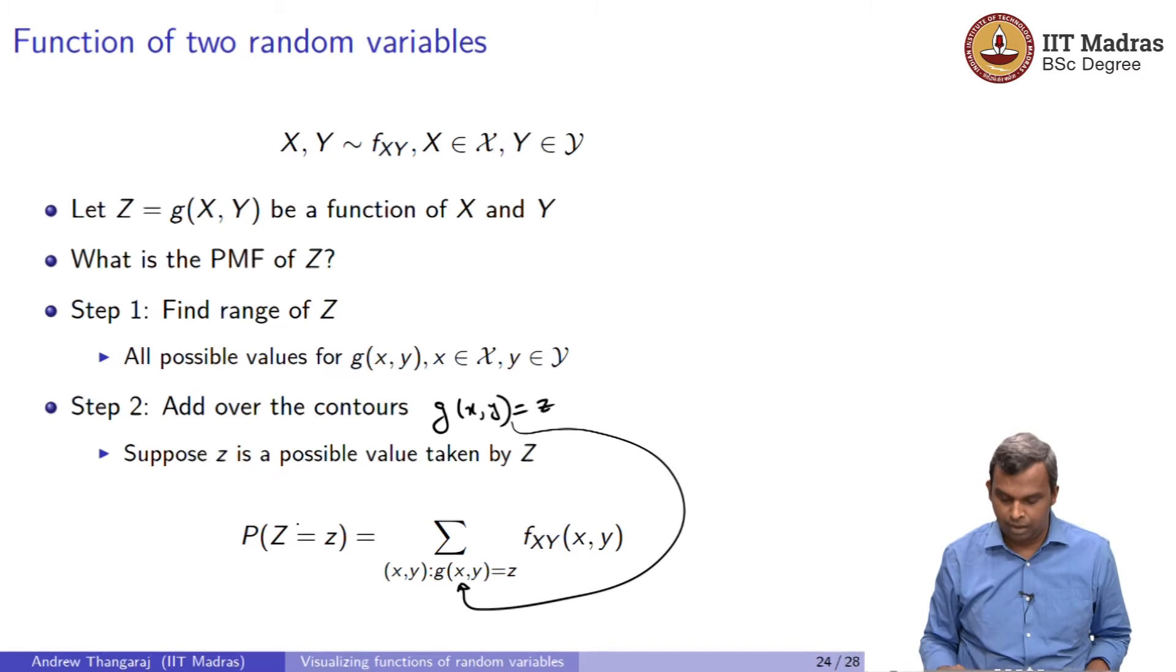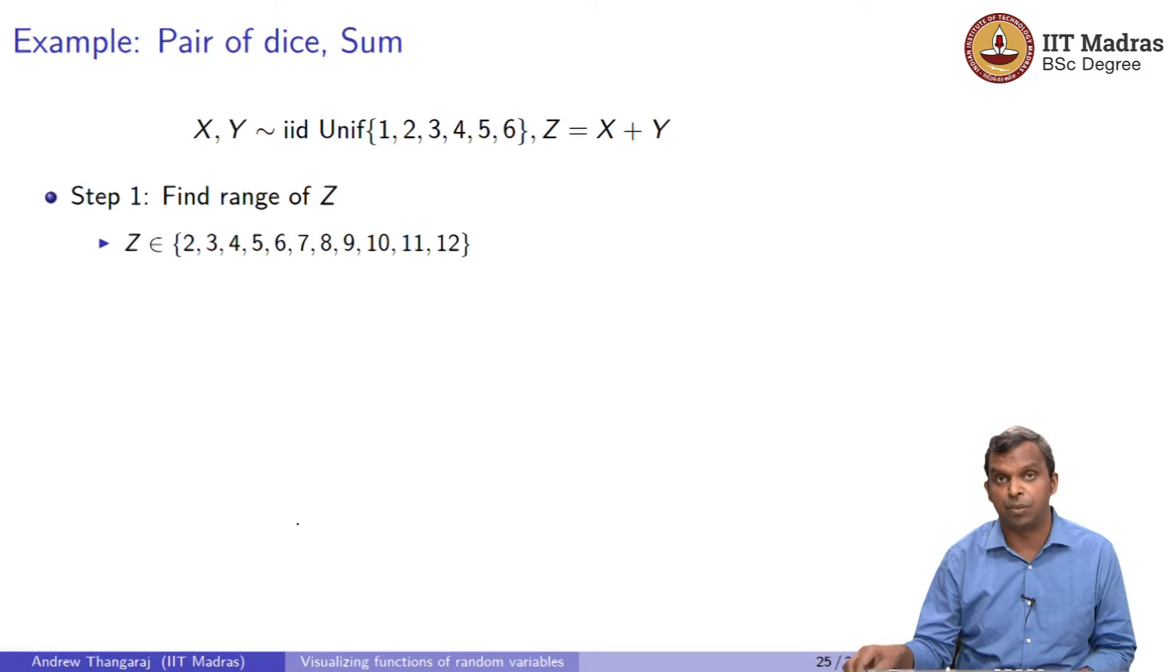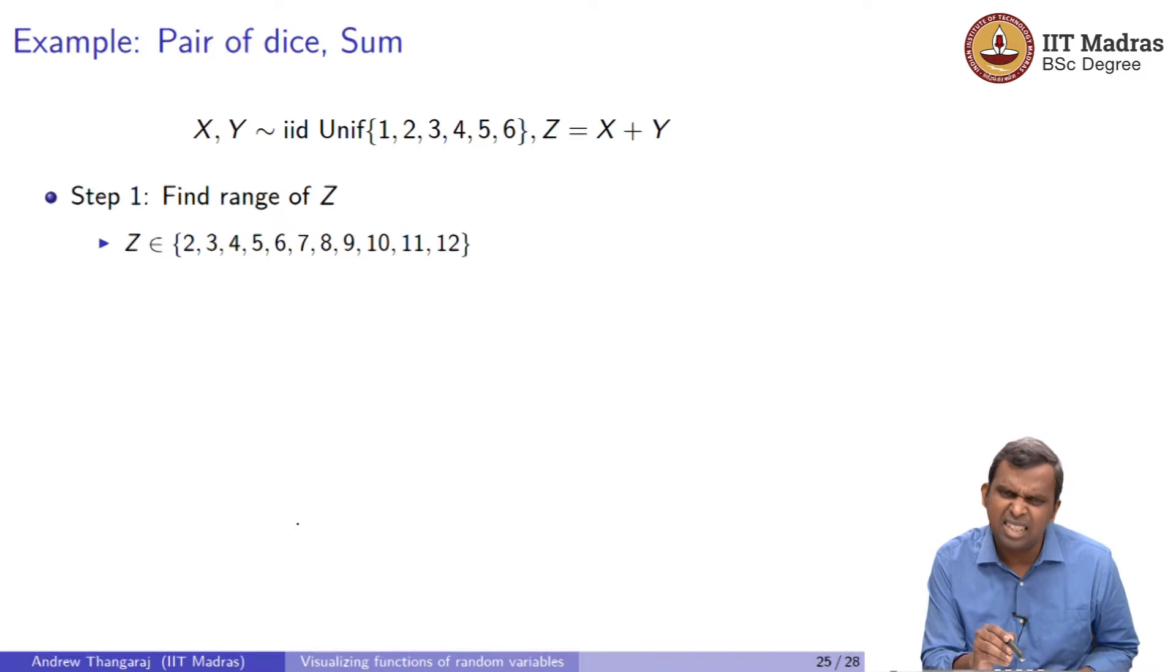Let me illustrate this with a couple of very simple examples. Here is a pair of dice. Uniform 1 to 6, z is x plus y. First step is the range. Range is easy enough in this. 1 to 6 if you add, it can go from 1 plus 1 which is 2 all the way to 6 plus 6 which is 12, and it is just a sequence after that, 2, 3, 4, 5 all the way to 12.